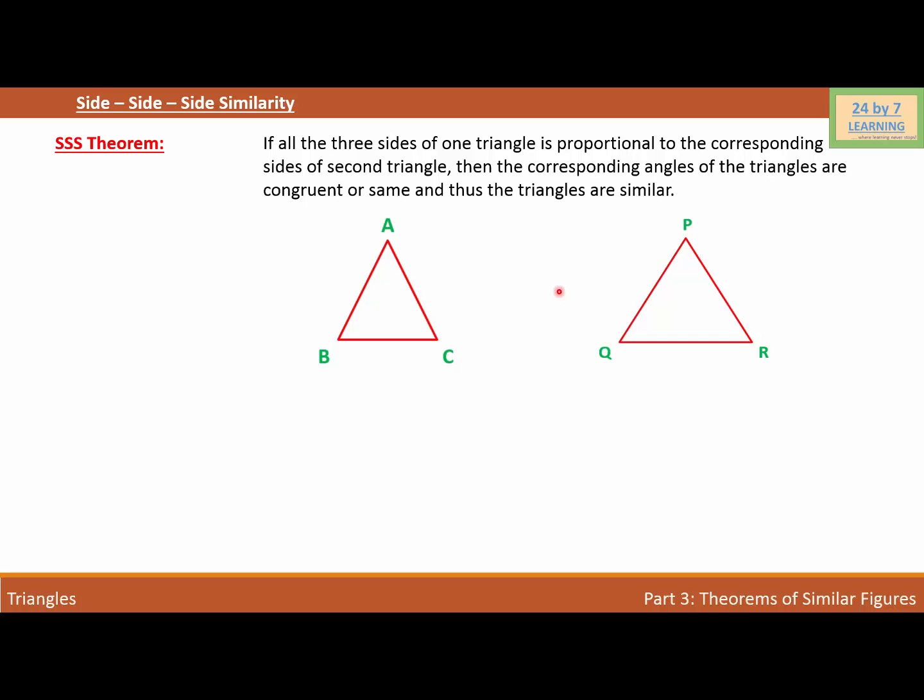If the ratio of the sides of the two triangles are proportional, we write AB over PQ equals BC over QR equals CA over RP.